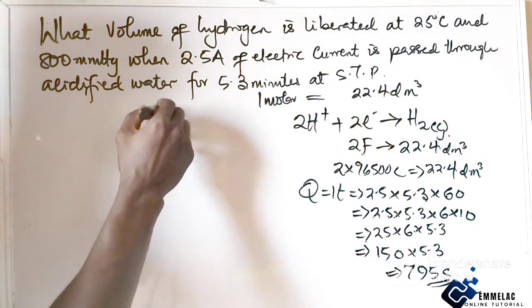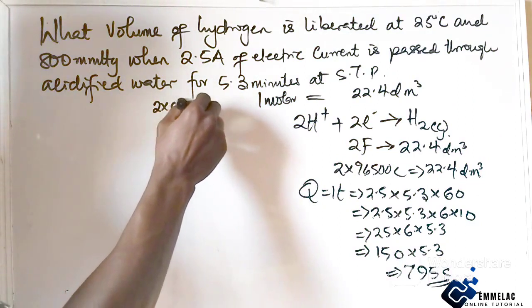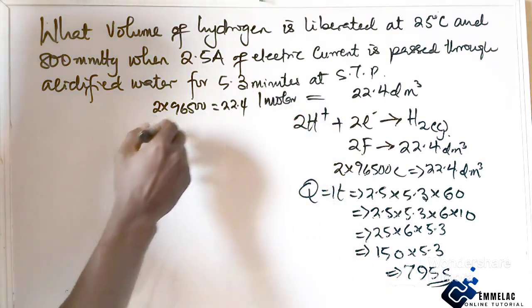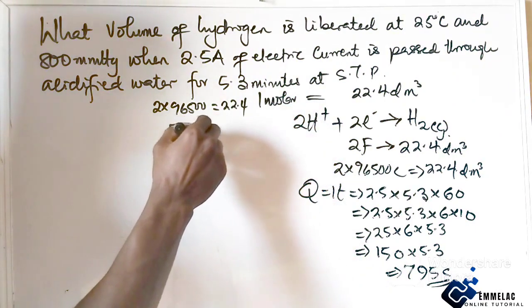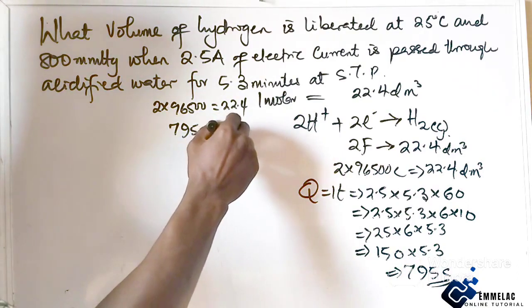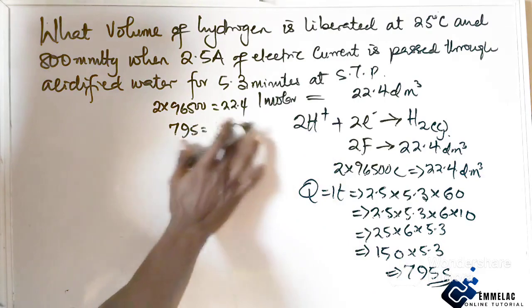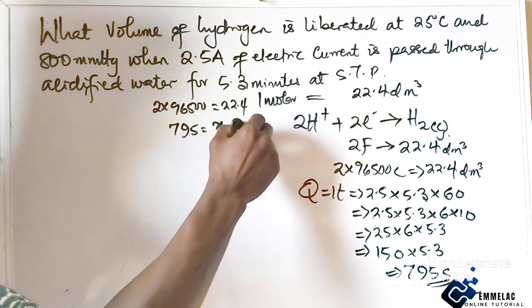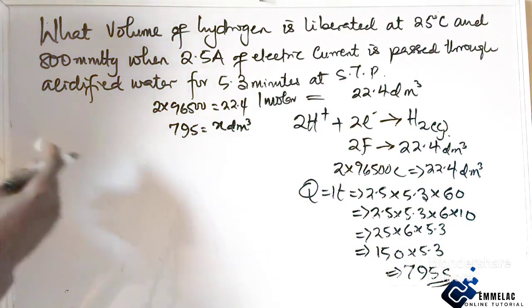So here we have: two times 96500 gives 22.4, then 795 will now give us X decimeter cube. Now cross multiplying...